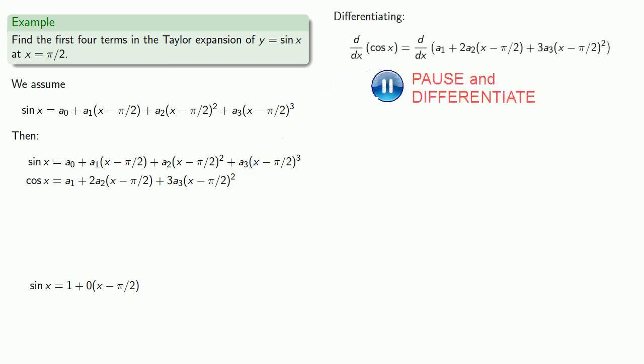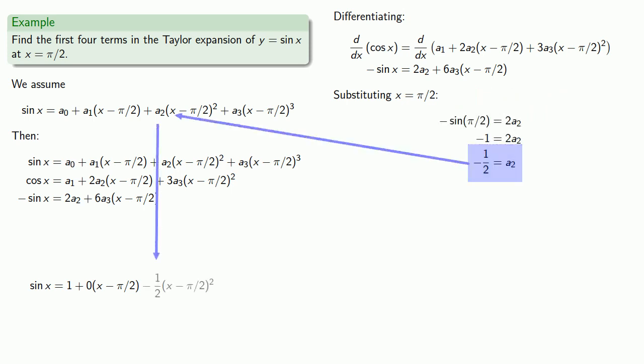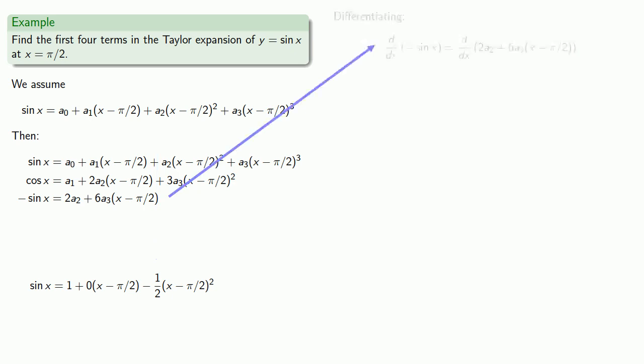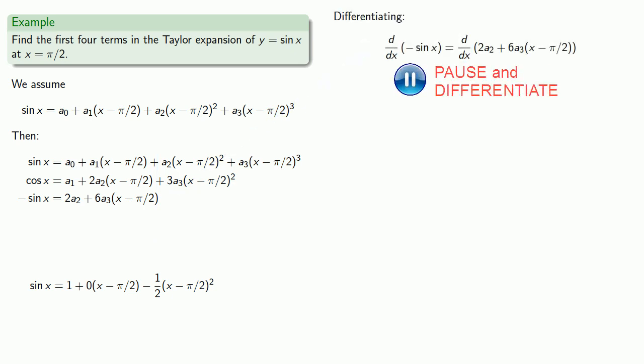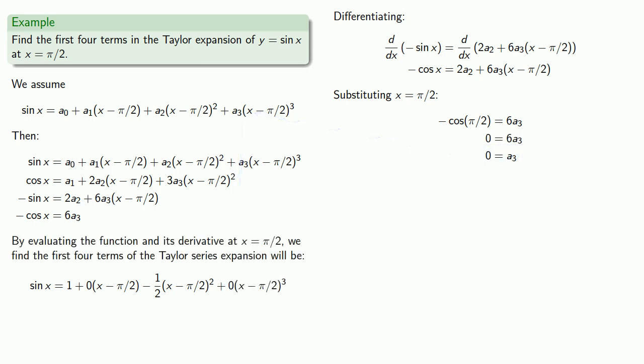Differentiating again, substituting x equals π over 2 and solving for a₂. And so by evaluating the function and its derivatives at x equals π over 2, we find the first four terms of our Taylor series expansion.